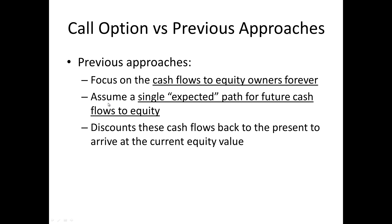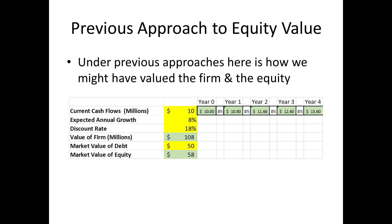We focused on an expected path for what those cash flows are going to be — one growth rate, for example — and any uncertainty around that would be dealt with in the discount rate, or assumed to be addressed through CAPM. Then you take these cash flows and discount them back to present value to get the current equity value or stock price, using the present value of perpetuity approach.